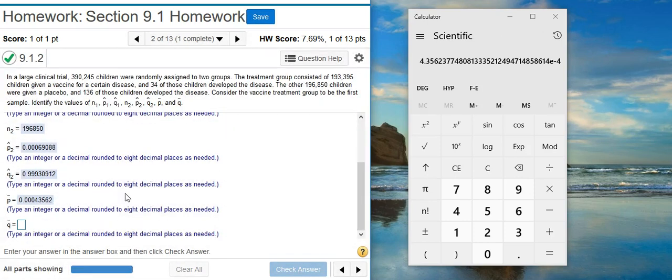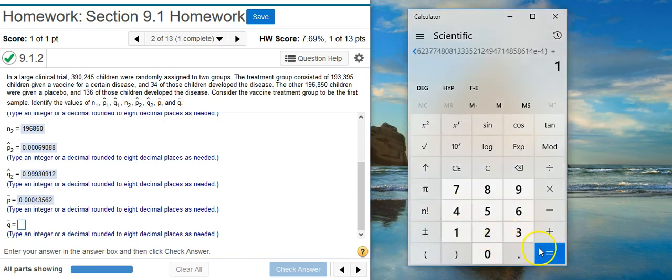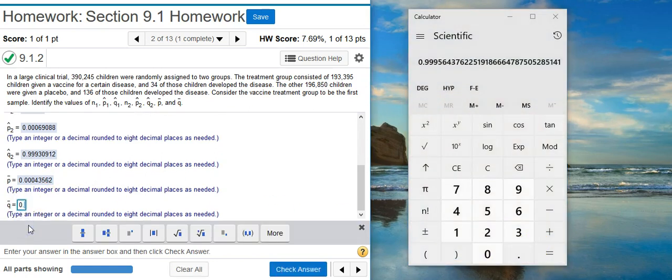And last, but certainly not least, I'm asked for Q-bar, which, again, is just going to be the complement of P-bar. So, I'm going to take this value here for P-bar in my calculator. I'm going to make it negative, add the 1. And there's my value for Q-bar. I'll put that here in my answer field.